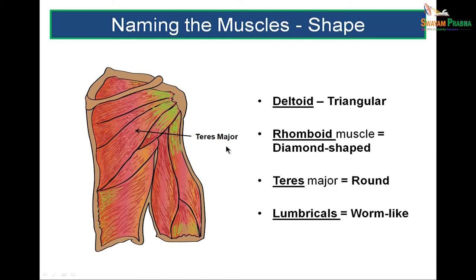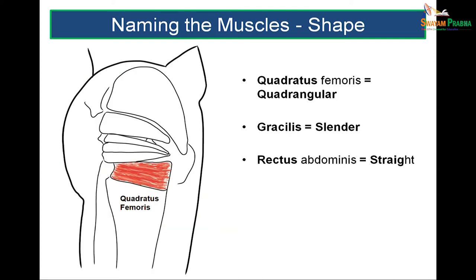Naming muscles by shape: the deltoid means a triangle, so the deltoid is a triangular muscle. The rhomboideus muscle of the back is diamond-shaped — rhomboid means diamond-shaped. Teres major is a rounded muscle; teres means round. The lumbrical muscles of the hand are very slender and worm-like, hence they are called lumbricals. Quadratus femoris is a quadrangular muscle. Gracilis on the inner aspect of the thigh is slender, hence the name. Rectus means straight, so the rectus abdominis is a straight muscle.